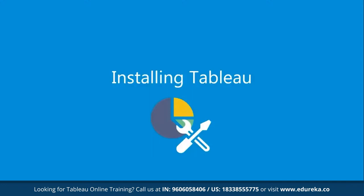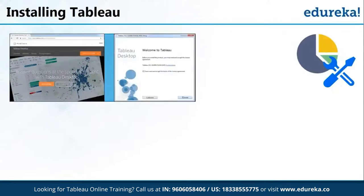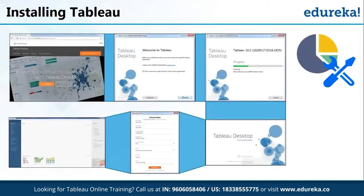Let us move on and talk about how to install Tableau. Installing Tableau is very easy — you can go to the Tableau website and download the EXE file, run that file, and click install. It takes minutes or sometimes only a few seconds. After installing Tableau Desktop — the latest version is 10.2 — it will ask you to register to activate your version. You can purchase a license key, and if you are a student and want it for academic purposes, you can get it for free for a year. Just go through the registration process and Tableau is ready to use.